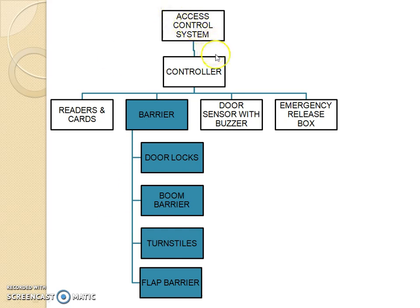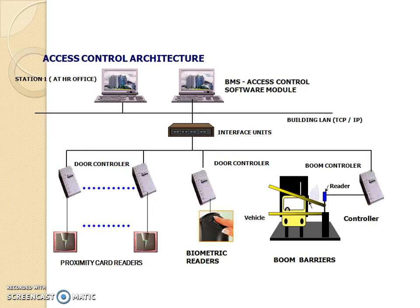If you see the access control system, you have a controller or multiple controllers which are connected to various devices. Out of which, you see devices like readers and cards, barriers, door sensors with points, and emergency break-glass boxes. If you look at the access control architecture, the controller is connected to a lot of door controllers or boom barriers which also have a controller.